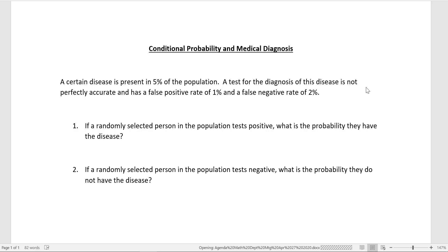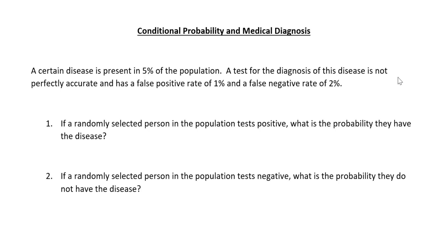Hi, this is Scott Vaughn. Let's take a look at this example of conditional probability and medical diagnosis. This is an example I've done before in an older video, but it's obviously so relevant now. I'm thinking about COVID-19, and I did not try to use any numbers related to that specific disease. I just want to look at probability and conditional probability mathematically, because this idea of testing and having false positives and false negatives is relevant.